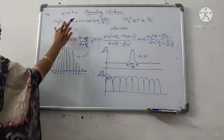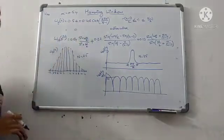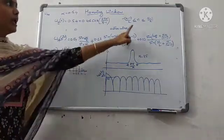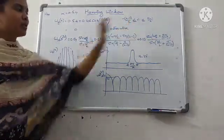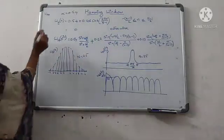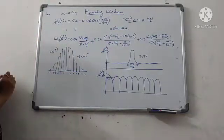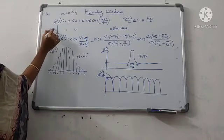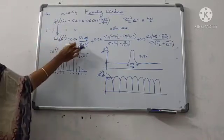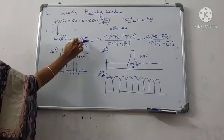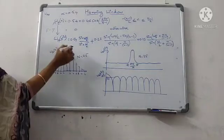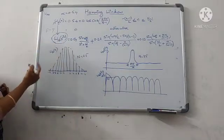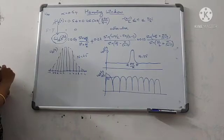After substitution with alpha equal to 0.54, the equation is 0.54 plus 0.46 cos(2πn / (N−1)). The Fourier transform of W_H of n gives: 0.54 · sin(ωN/2) / sin(ω/2). The procedure for finding W_H(e^jω) is the same as already described for the raised cosine window.